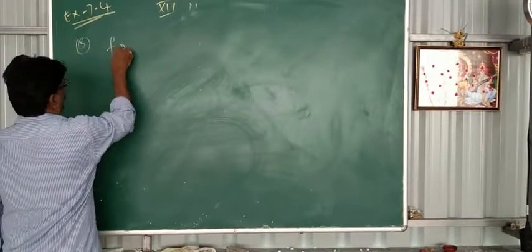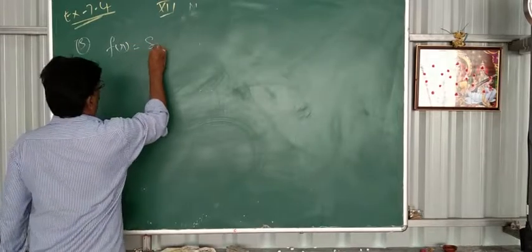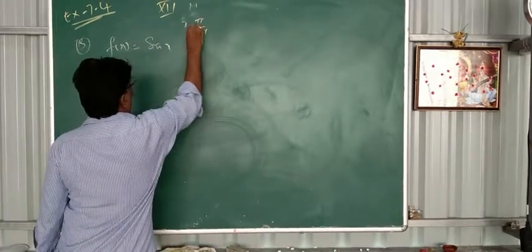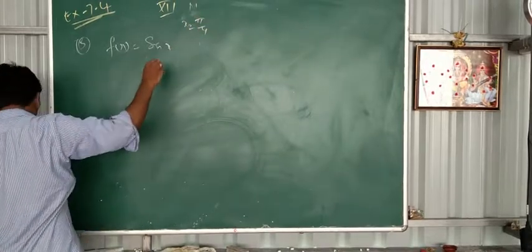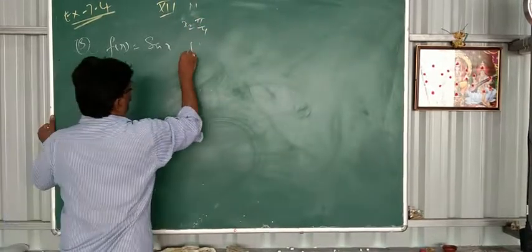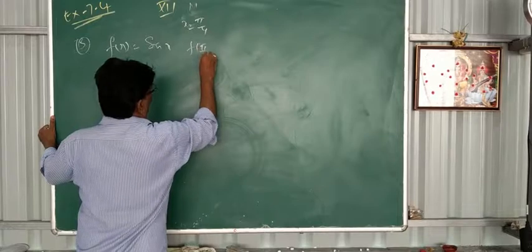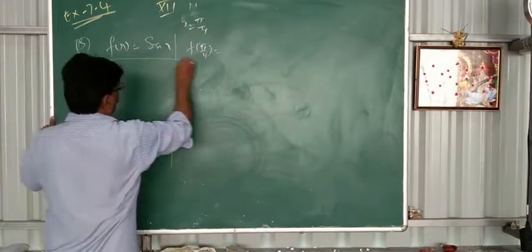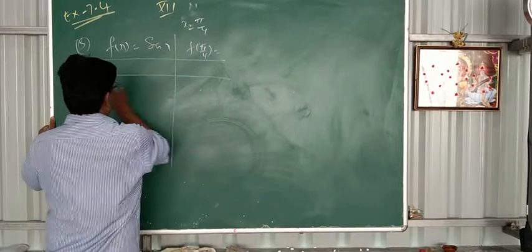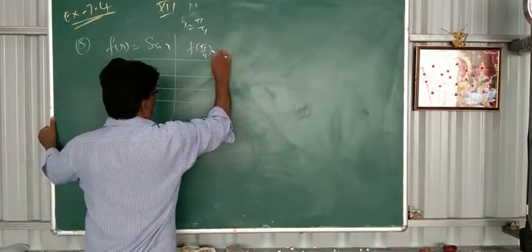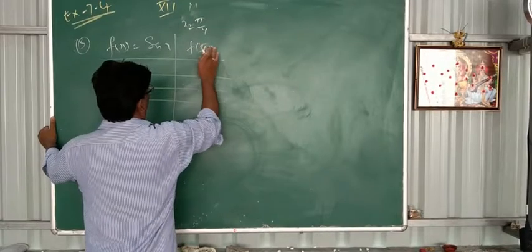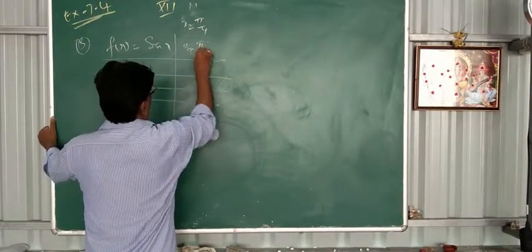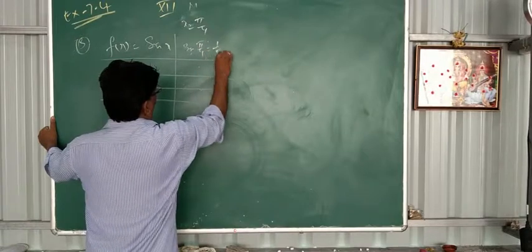So third term f of x equals sin x again. Now x equals pi by 4. Now f of pi by 4, you can write as f of sin pi by 4, 1 by root 2.